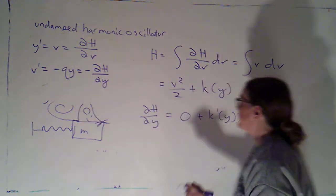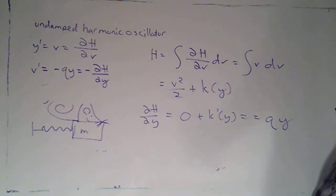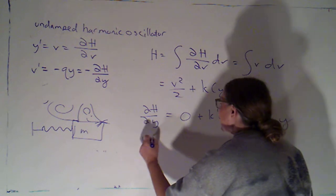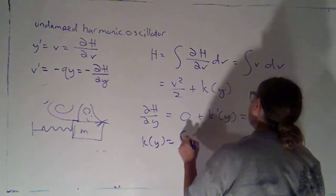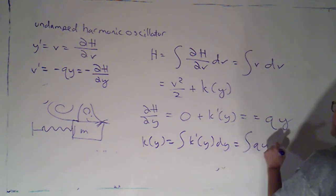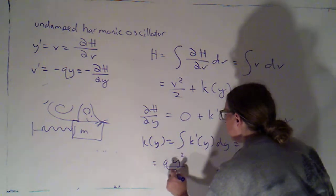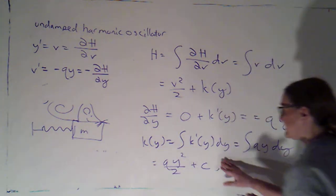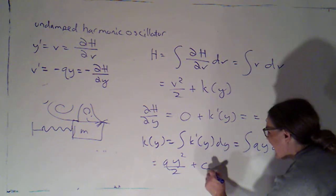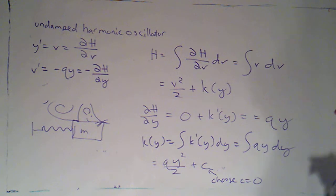Partial of h with respect to y will be 0 plus k prime of y, but I know that's the opposite of this, so that's just q times y. The opposite of negative q times y. So, k of y will be the integral of k prime of y dy, which is the integral of qy dy, which is going to be qy squared over 2 plus c, where c is an honest to goodness constant, and I'm allowed to choose c equals 0, because I just want a Hamiltonian function.